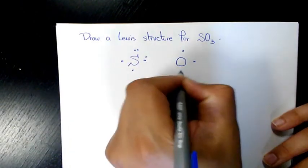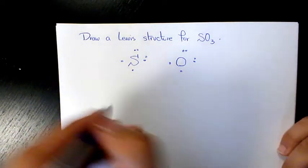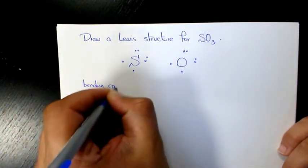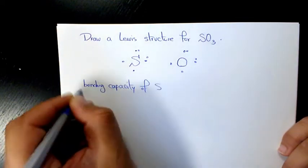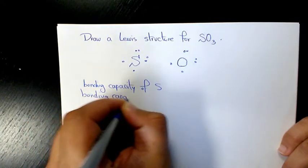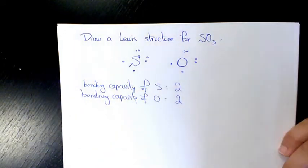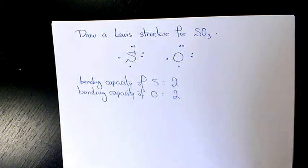oxygen one two three four five six, both of them are six. And bonding capacity of sulfur and bonding capacity of oxygen, both of them are going to be two. However, since we have only one atom of sulfur